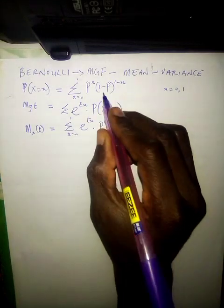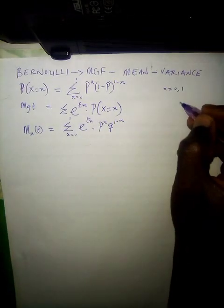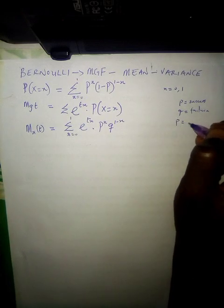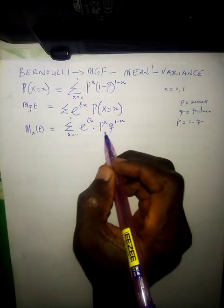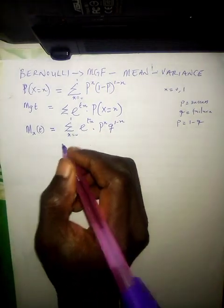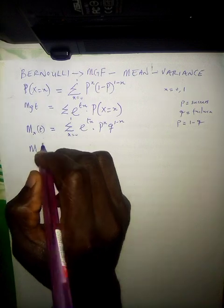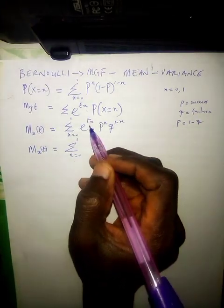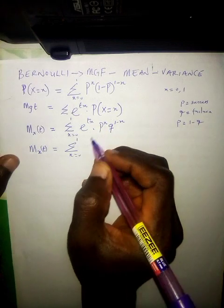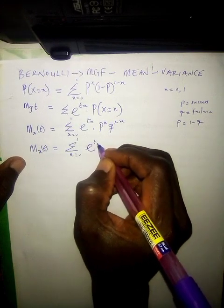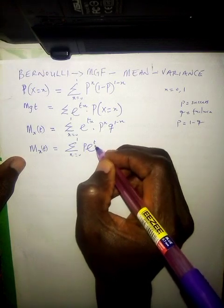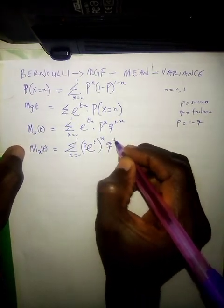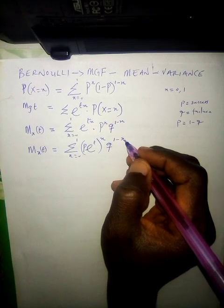Here we have (1 minus p), which is the same as q raised to the power (1 minus x). p is the probability of success, q stands for (1 minus p), so I substitute q in place of (1 minus p). We now write M_X(t) equals the summation with x from 0 to 1 of e^(tx), factorizing x to get (p·e^t)^x multiplied by q^(1 minus x).